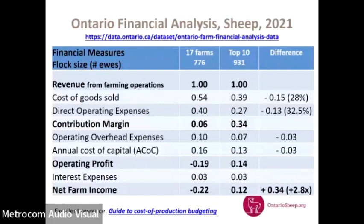We look at revenue at 100%, so think of the other numbers as cents for every dollar of revenue. On average in 2021, cost of goods sold for those 17 farms was 54 cents — covering feed, seed and fertilizer. For the top 10, it was 39 cents. Direct operating expenses were 40 cents versus 27 cents for the top 10. So for the overall group, we've almost spent our dollar, with only 6 cents left as a contribution margin. Once we cover overhead and annual cost of capital, we're in the red — about 22 cents in the red by the end.